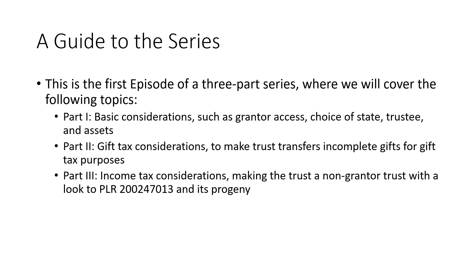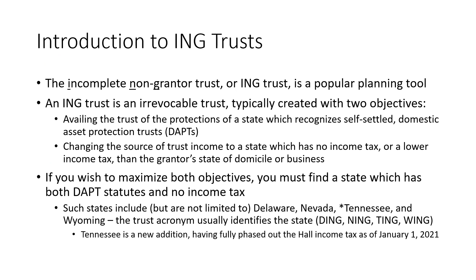As I mentioned, with the incomplete and non-grantor features, that gives you a hint as to what ING stands for — it's an incomplete non-grantor trust, as noted on the first bullet point. The ING trust is an irrevocable trust created with two objectives. One is that you are looking to avail yourself of the protections of a state different from your own state of domicile. That different state should recognize self-settled asset protection trusts, known as domestic asset protection trusts, or DAPTs. Typically, you'll also want a state that has no income tax, because the intent is to change the source of trust income to a state with no income tax, or at least a lower income tax than the grantor's state of domicile. So you get asset protection, and you could remove state income tax on the income generated by the trust assets.